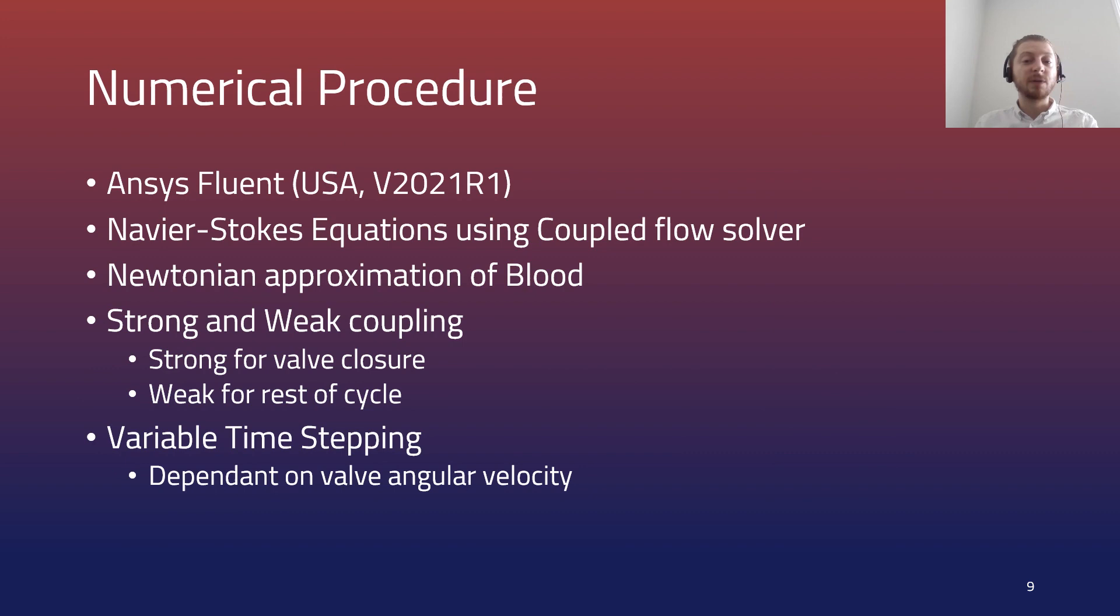ANSYS Fluent was used to solve the Navier-Stokes equations for a Newtonian approximation of blood using the coupled flow solver. A fully implicit strong coupling solution algorithm was employed during instantaneous valve opening and closing to maximize the computational accuracy at this time, whilst a weak coupling algorithm was employed for all other cycle stages to maximize the computational efficiency during that time.